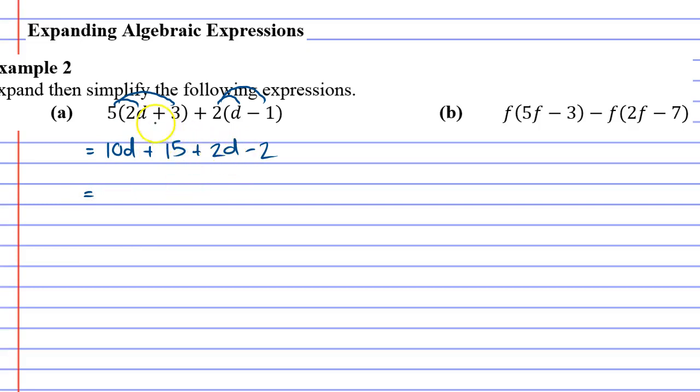After expanding we then simplify. So you can only combine what are called like terms. 10d plus 2d is 12d, and these are also like terms, the 15 and the minus 2, because they're just numbers. You can just go 15 minus 2 is 13, so 12d plus 13 at the end. All right, let's do question B, same thing.